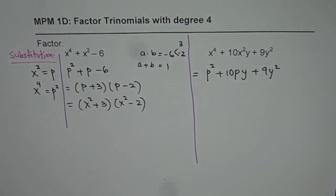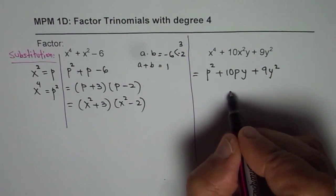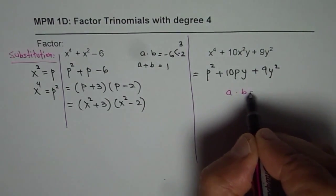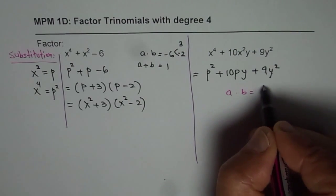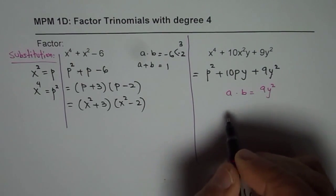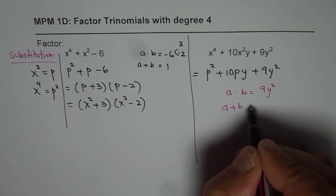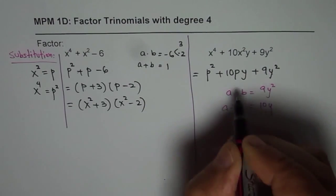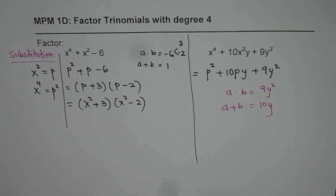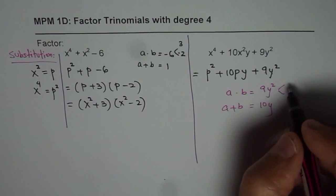At this stage, we are looking for two numbers, a and b, whose product equals 9y². Remember, 9y². And whose sum is 10y, the coefficient of p. The two numbers are 9y and y.